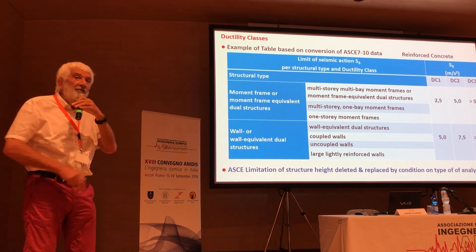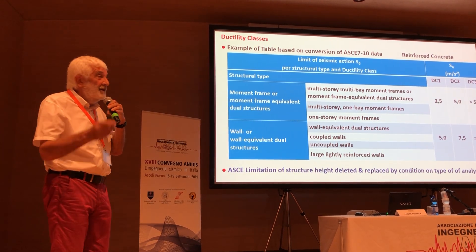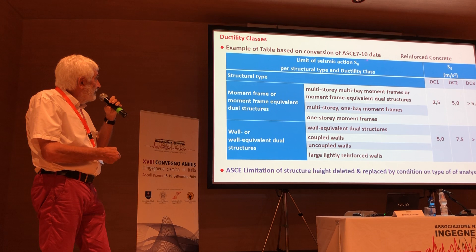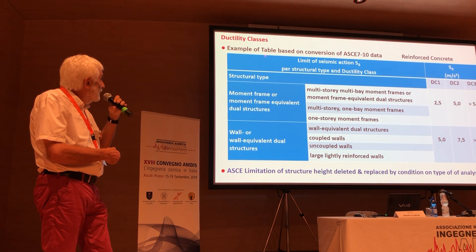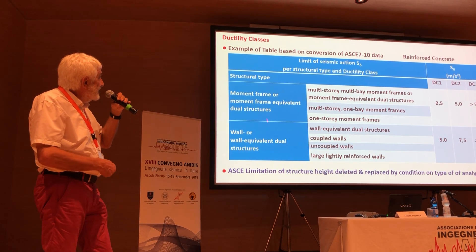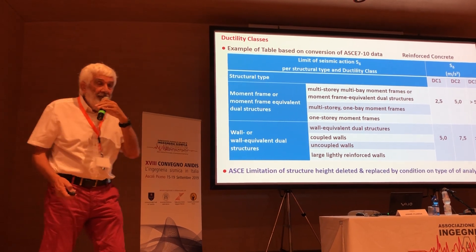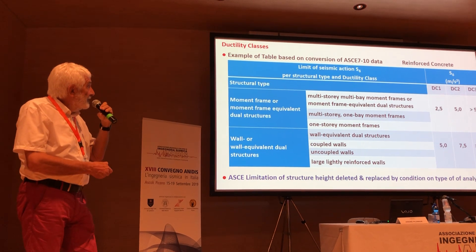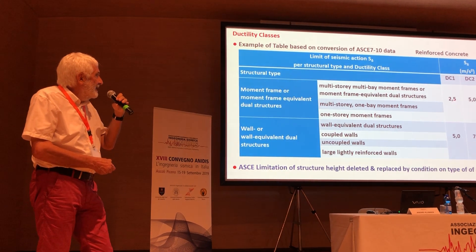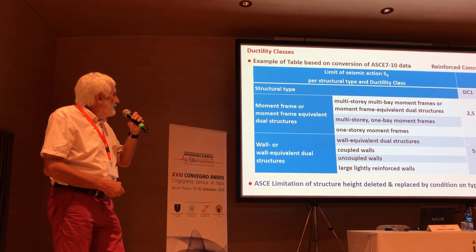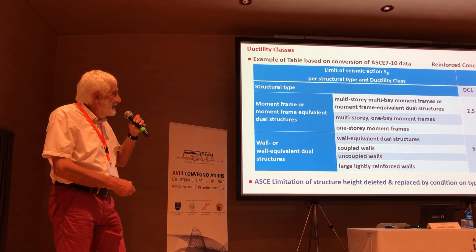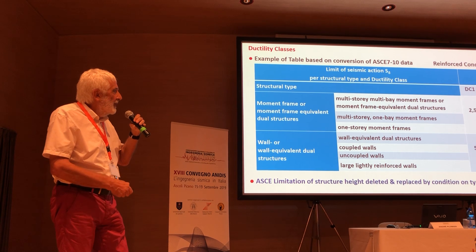For reinforced concrete structures in the current draft, DC1 limits are: S_delta = 2.5 m/s² (equivalent to 0.1g PGA) for moment-resisting frames, and 5 m/s² for walls. DC2 limits are 5 and 7.5 m/s² respectively, where ductility measures apply. DC3 has no upper limit. These are order-of-magnitude values that still need to be justified with correct numbers.